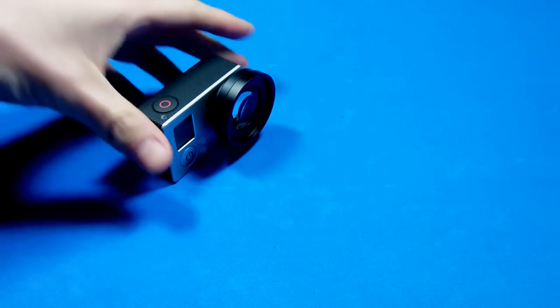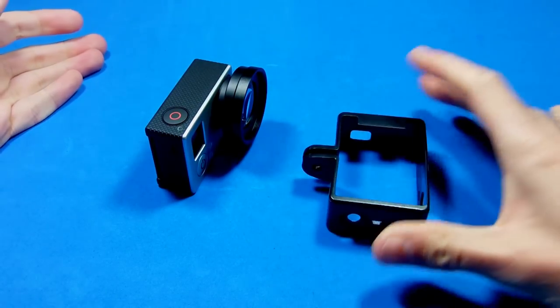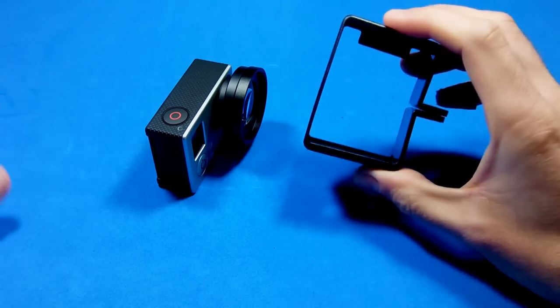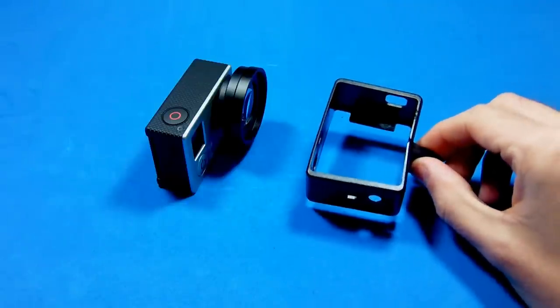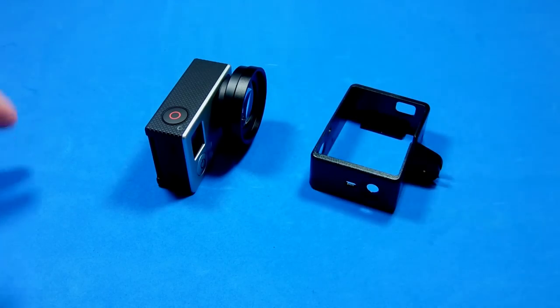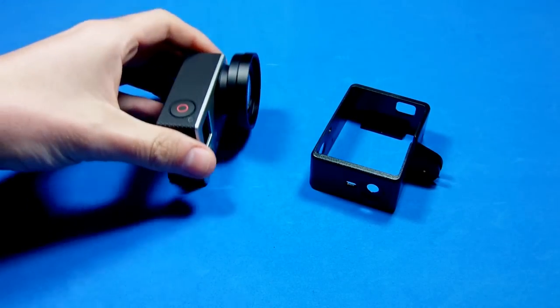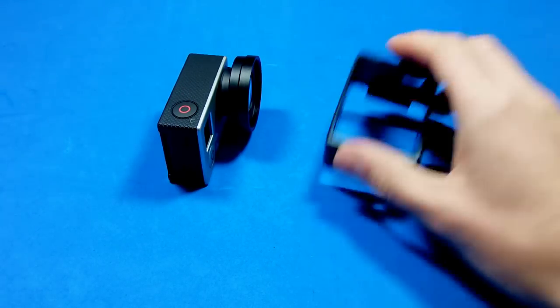If you want to use it on a tripod like this, you cannot use the normal case. You need one of these. You can get these on eBay for around four dollars. The original GoPro ones cost up to 45 bucks, so it's a lot of money for a piece of plastic, but it will be the only option to use this in your GoPro mounts or on a tripod.